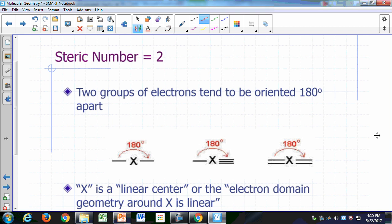Let's look at the simplest case where there are only two groups of electrons sticking out of an atom. That's the case where you have a steric number of 2.